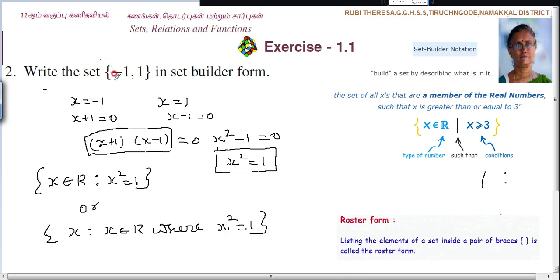So you are getting two elements, minus 1 and 1. Why I am giving this real number is, here it is, negative number is also there. So instead of natural, you are giving real.